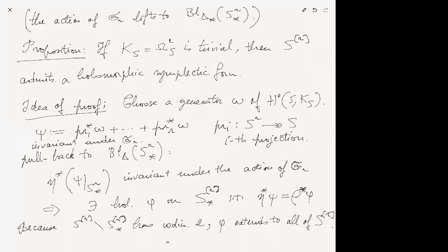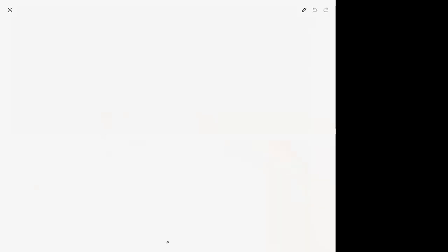We have our holomorphic two-form — it's holomorphic. The only question is whether it is non-degenerate. We need to show that φ is everywhere non-degenerate.